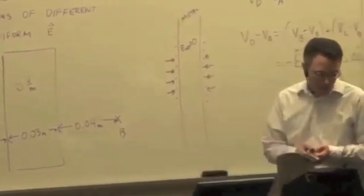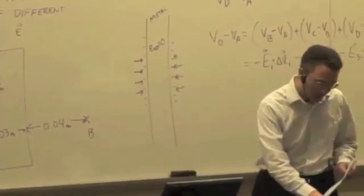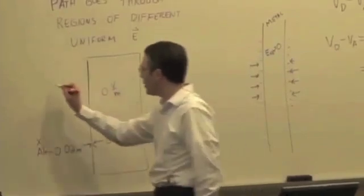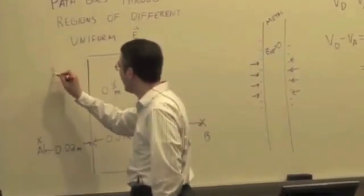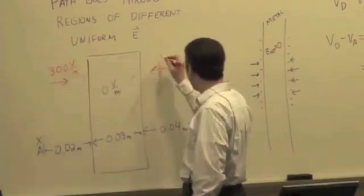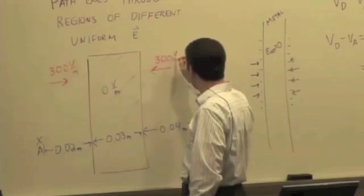Okay, so electric field on the left side is pointing in the positive x direction, 300 volts per meter. Negative x direction on the other side, 300 volts per meter.